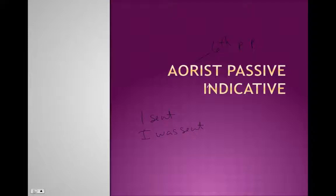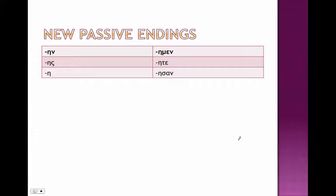On the sixth principal part we're going to add a series of endings. It is aorist, it is a past tense, so we're going to use our epsilon augment and then the sixth principal part and then our endings. Now these endings are a little different — these new passive endings, which are only used for the aorist passive, are actually active endings.